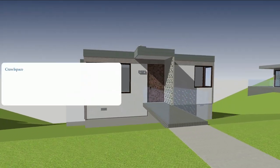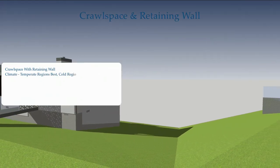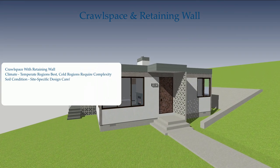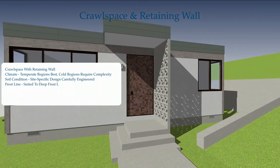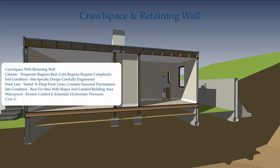Crawl space with retaining wall: Climate — temperate regions best; cold regions require additional complexity. Soil condition — site-specific design, carefully engineered. Frost line — suited to deep frost lines; consider seasonal fluctuations. Site condition — best for sites with slopes and limited building area. Waterproofing — erosion control is essential due to hydrostatic pressures. Cost — costliest of these five; requires an engineered design.